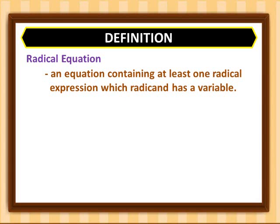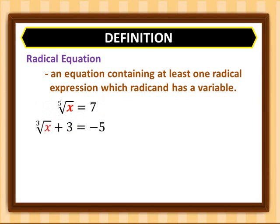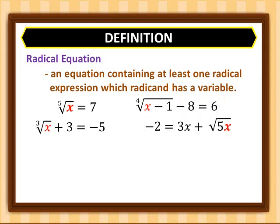These are examples of radical equations: the fifth root of x is equal to 7; the cube root of x plus 3 is equal to negative 5; the fourth root of x minus 1, minus 8 is equal to 6; and negative 2 is equal to 3x plus the square root of 5x.